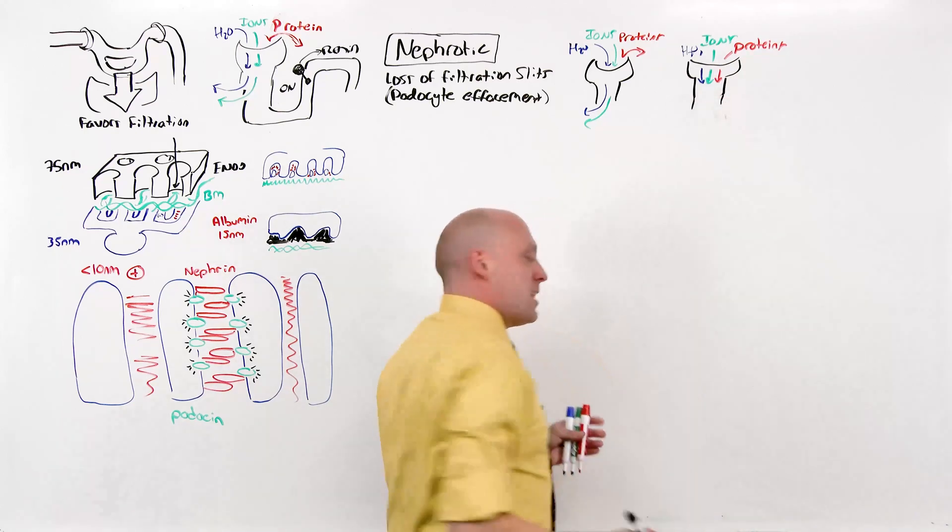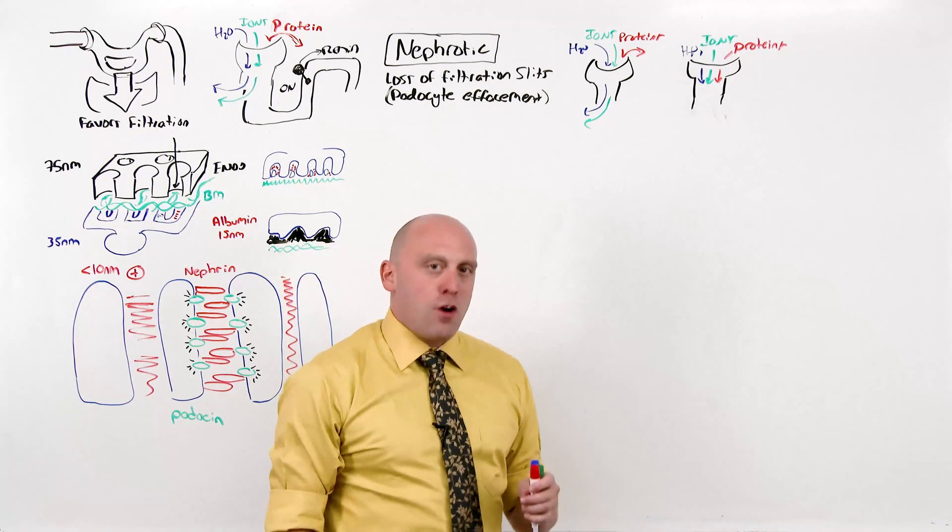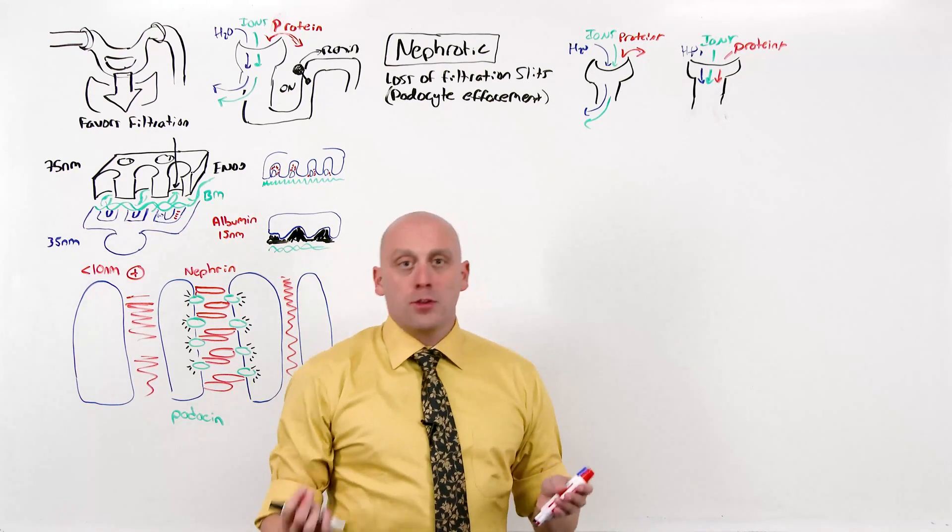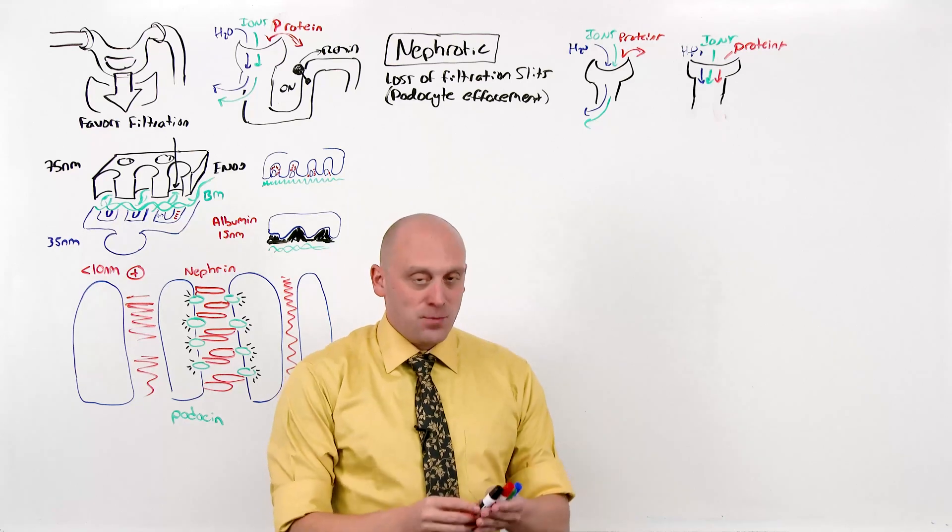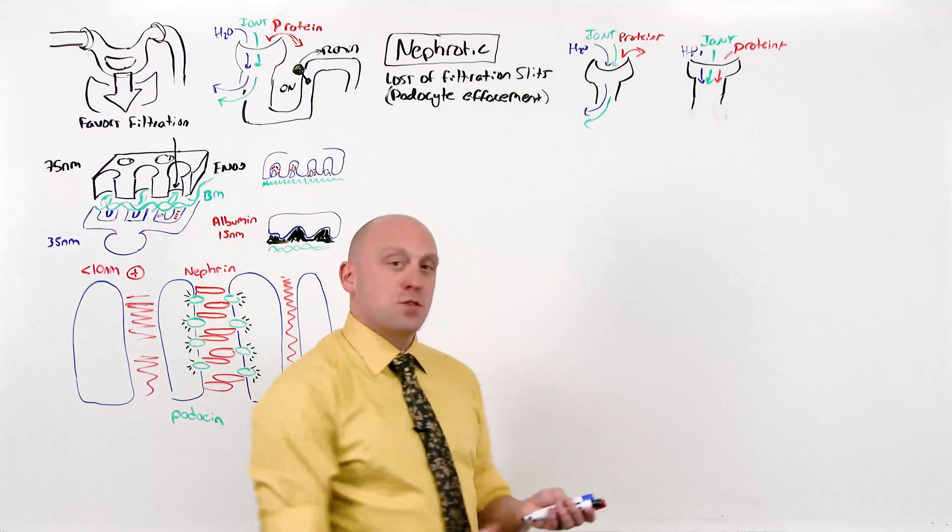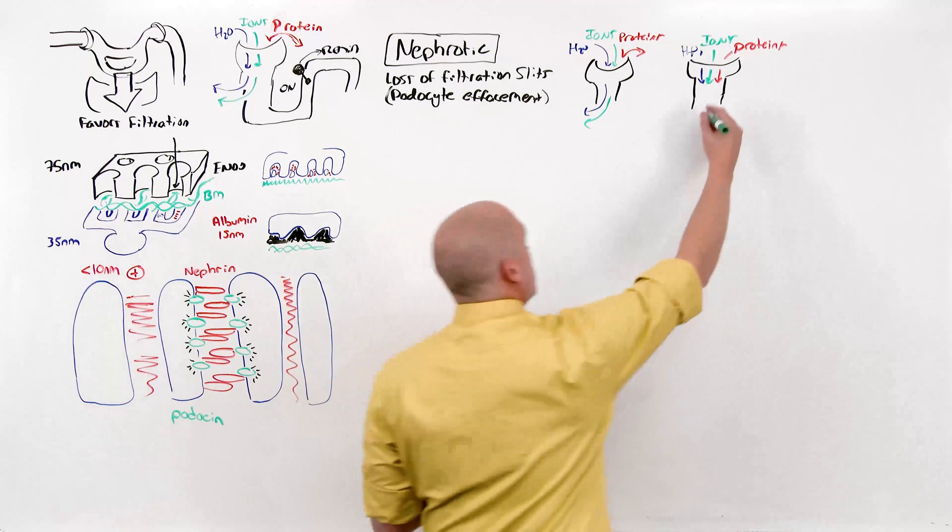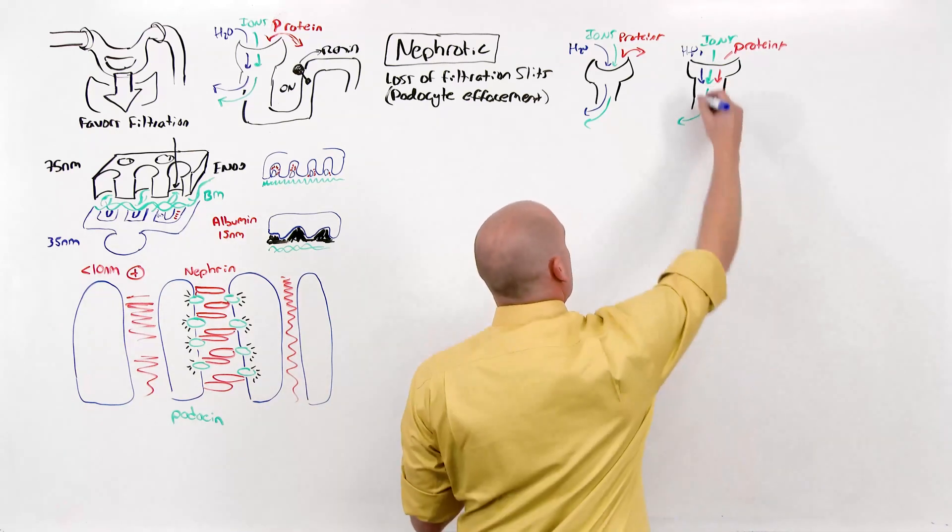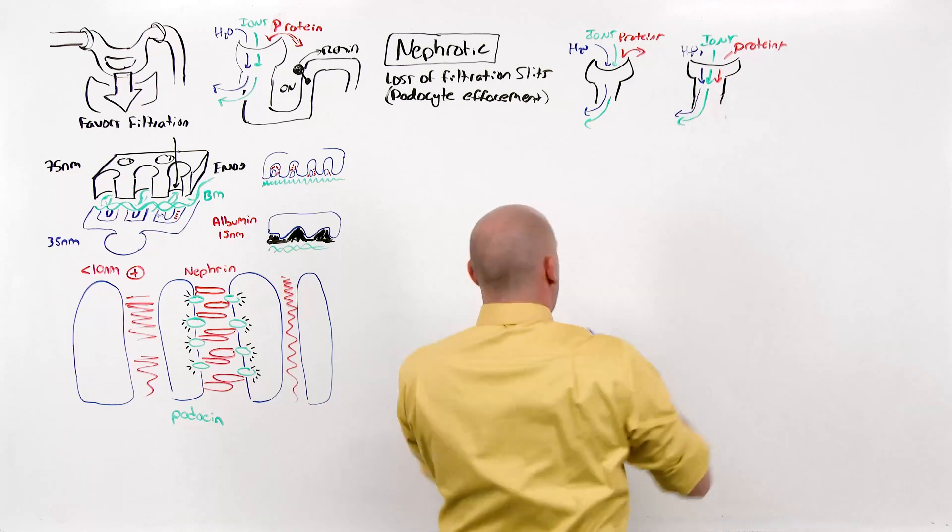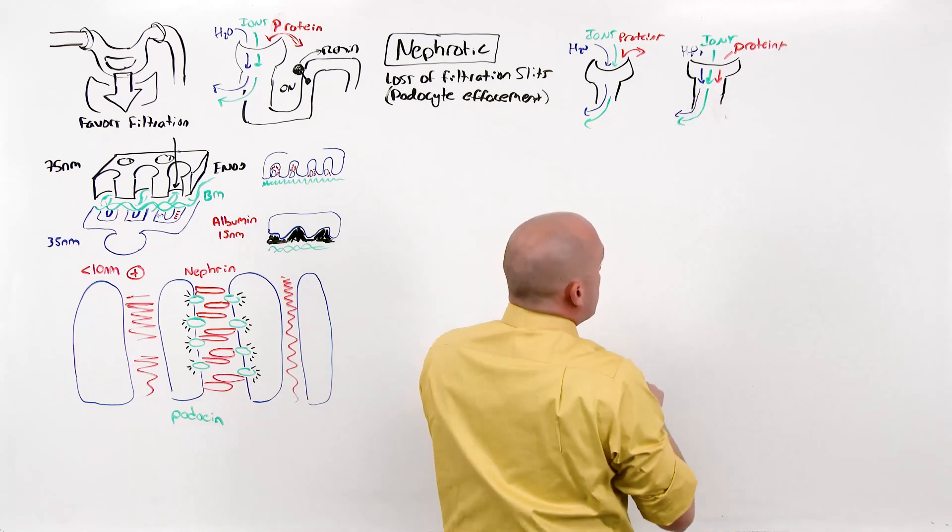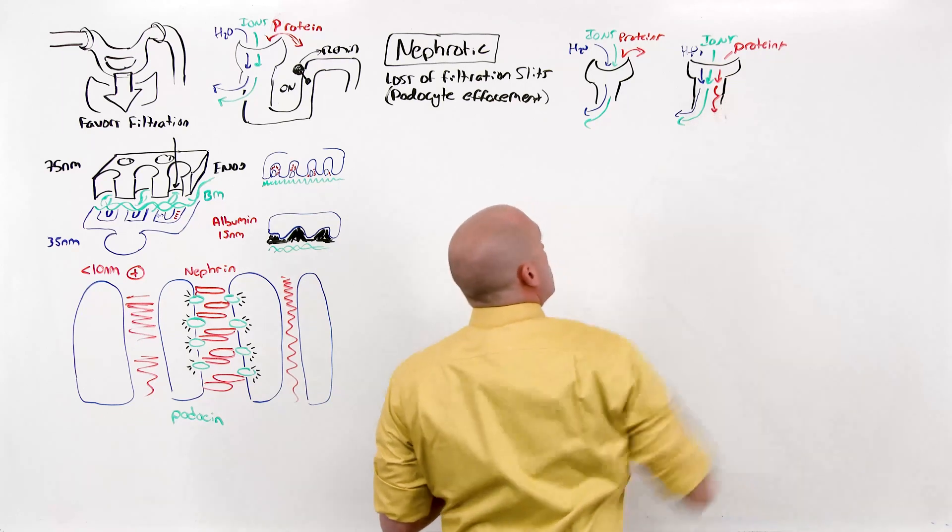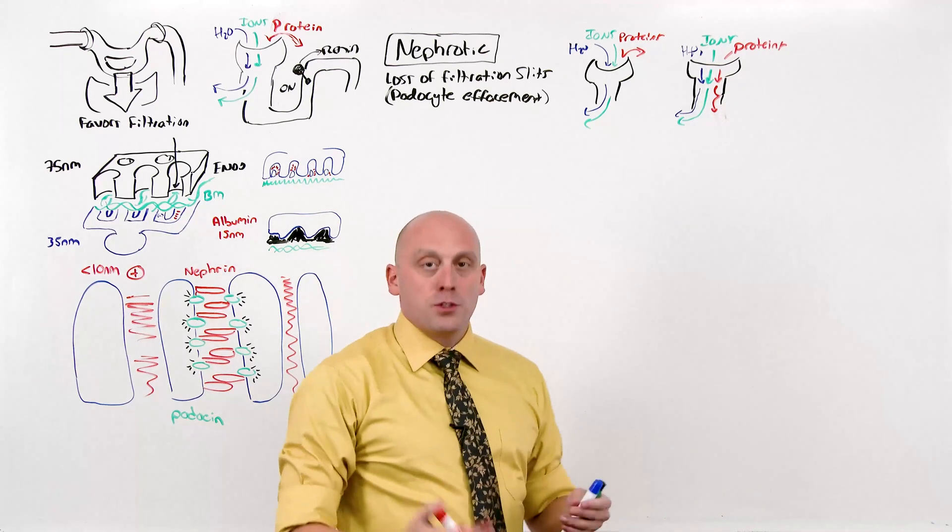Have we said anything about GFR, peritubular capillaries, resorption, or epithelium? Have not. Which means that everything else just functions. Which means that the ions that got filtered get resorbed. The water that got filtered gets resorbed. But proteins, too big, they're not supposed to be in here, don't know how to get out. And so that results in proteinuria.